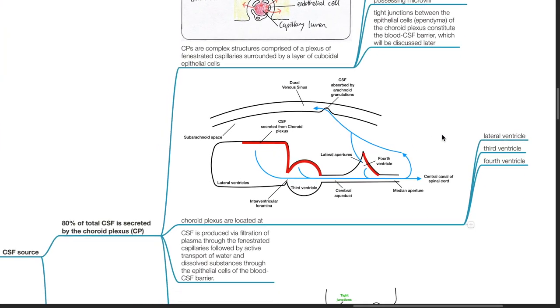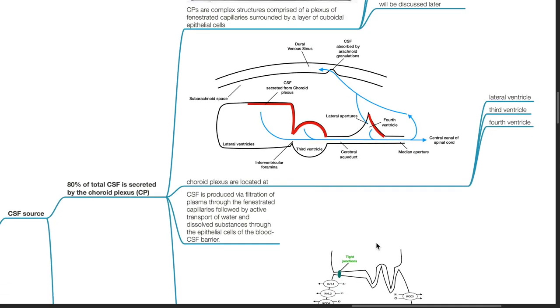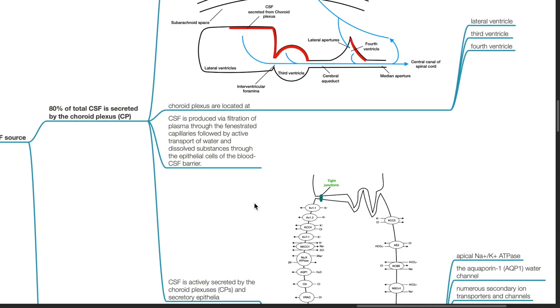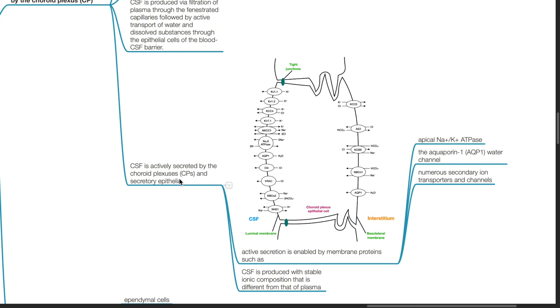Choroid plexus are located at the lateral ventricle, third ventricle, and the fourth ventricle. CSF is produced via filtration of plasma through the fenestrated capillaries, followed by active transport of water and dissolved substances through the epithelial cells of the blood CSF barrier. CSF is actively secreted by choroid plexuses and secretory epithelia.